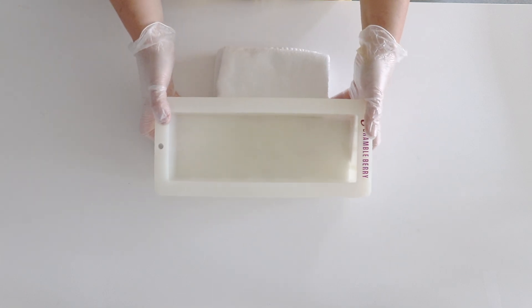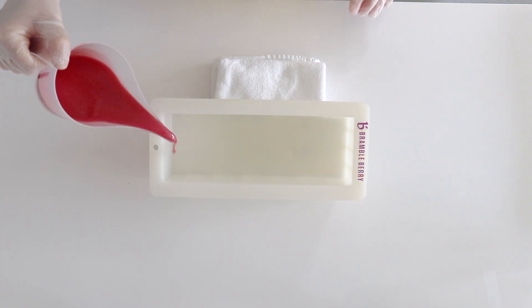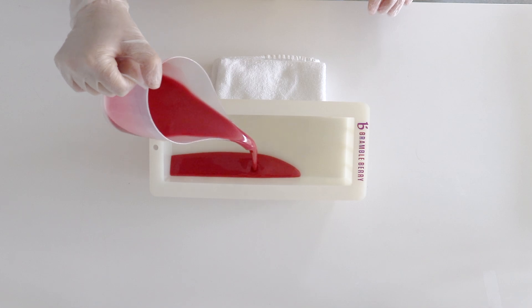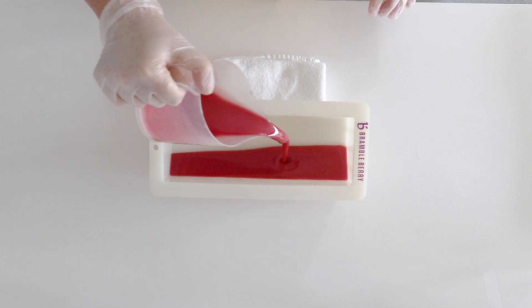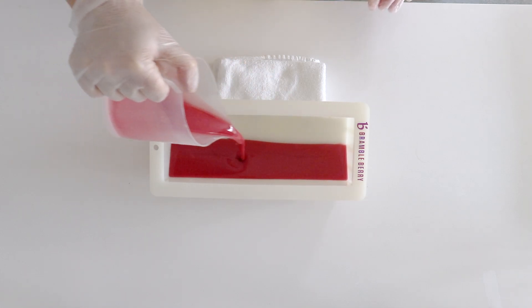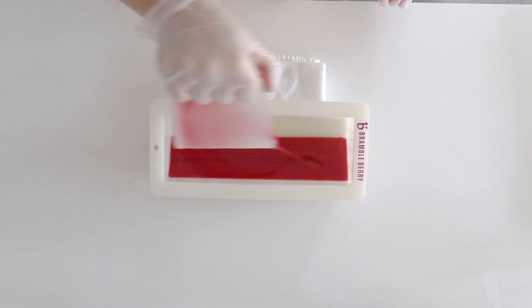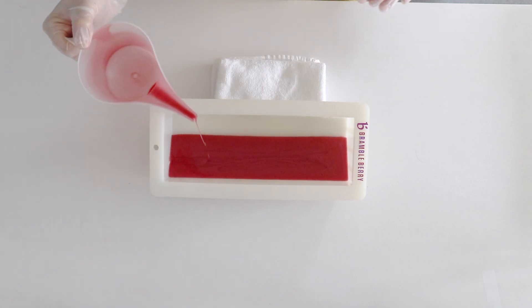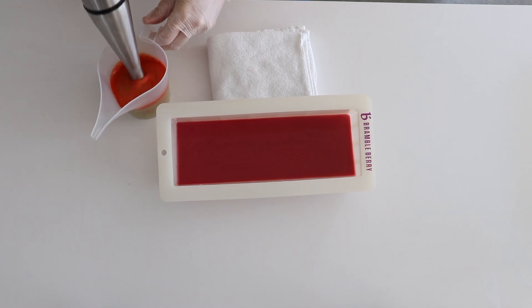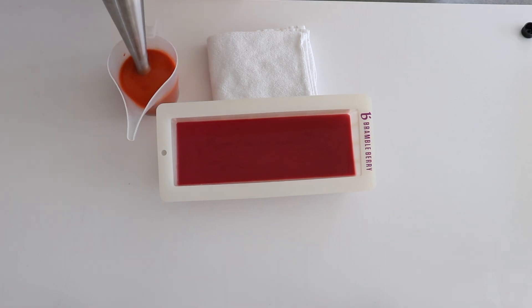Then I'll take a towel and prop the mold up on an angle and get the soap into the mold. The amount of time it takes for the layers to set will be different depending on several things, including which fragrance or essential oil you're using. Some can set up in a minute or two, others can take up to 10 or 15 minutes.